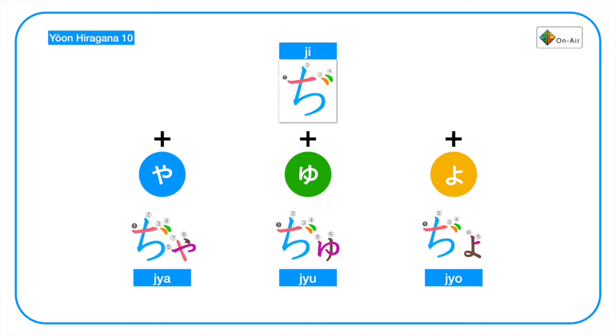The dakuon of chi, ji plus ya, yu, yo. Again, it is the same as the previous ji, the shi with double dot.